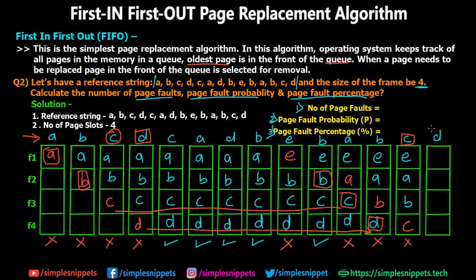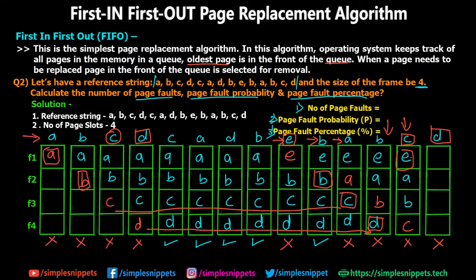On the last step, D is requested but is not in the four frames. A page fault is generated. Looking at the current frames: C came in most recently, then B, then A — so E is the oldest page compared to A, B, and C. Therefore E is replaced and D is loaded. A, B, and C remain as is. This is a page fault.